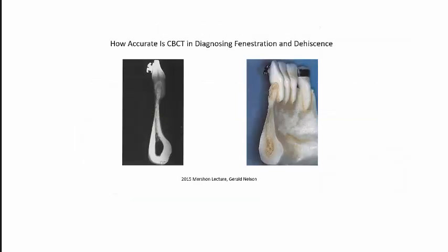This is a slide I got from Gerald Nelson. Unfortunately, this was a 19-year-old girl killed in an automobile accident. On the right is the dry skull section from the autopsy, and on the left is the cone beam CT of that dry skull section. When you look at this and ask yourself whether it accurately represents the alveolar anatomy and the relationship between the tooth roots and the alveolar housing, the answer is yes. There's no way of looking at it and saying there's 0.6 millimeters of bone covering these roots.